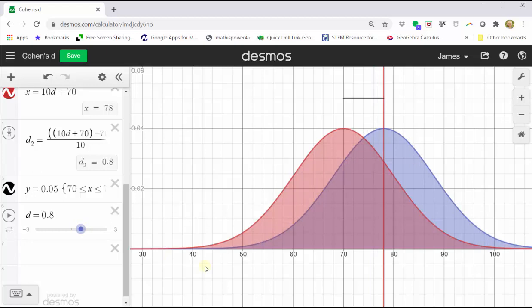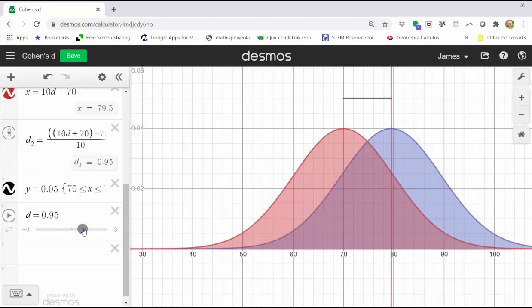If we set d equal to 0.8, we have what's considered a large effect, where in this case, the mean has increased from 70 to 78.